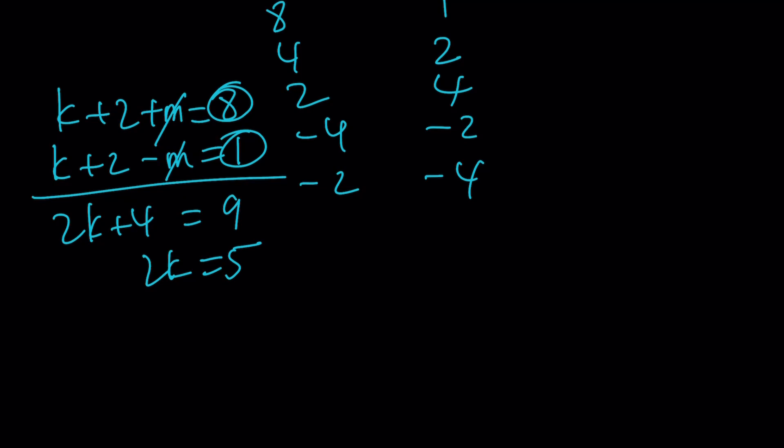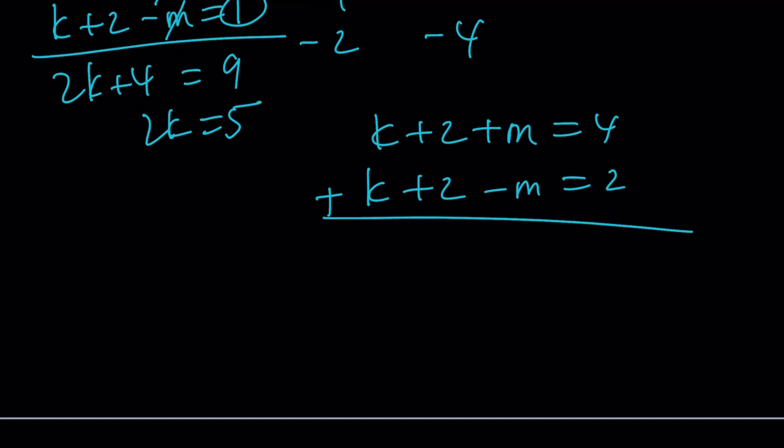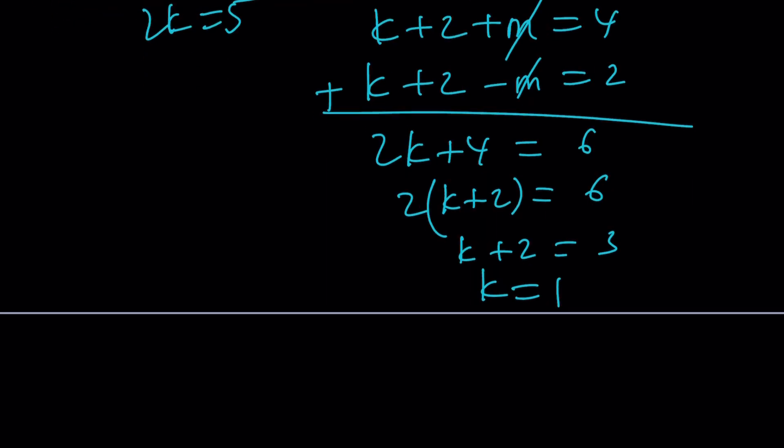Let's go ahead and find out. Now the second one works. So let's go ahead and go off of that. For example, if k plus 2 plus m equals 4 and k plus 2 minus m equals 2, from here we can basically add these equations up. That's going to give us 2k plus 4 equals 6. And then we can factor out a 2. k plus 2 equals 3. And from here we get k equals 1. And when k is equal to 1, m is going to be 1 as well.